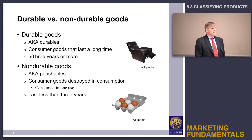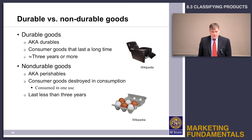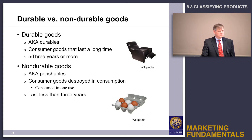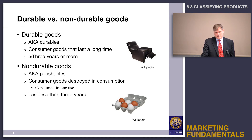Another way of classifying products is durable versus non-durable. Durable goods are things that last a long time — the definition can be somewhat arbitrary, but the ballpark is something expected to last three or more years. Something expected to last less than three years is a non-durable good.